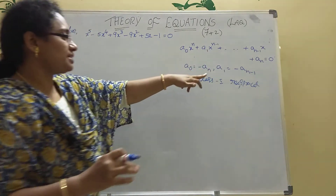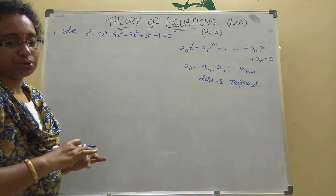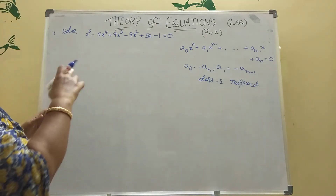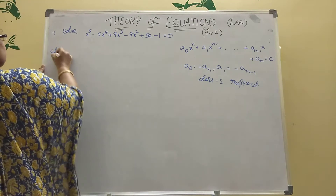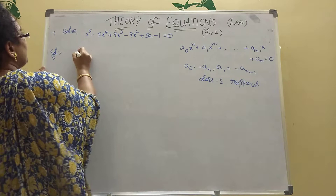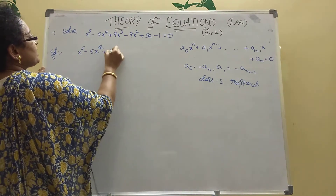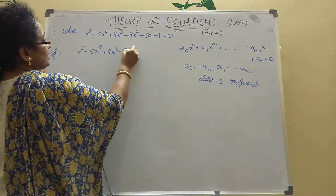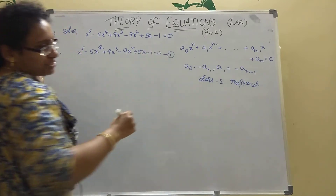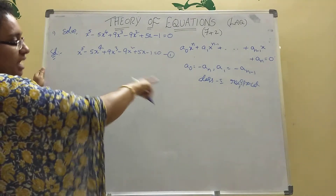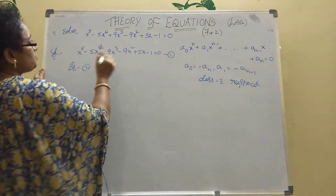A₀ = -Aₙ and A₁ = -Aₙ₋₁ — that is called Class 2 reciprocal equation. Now come to the point. Here the given equation is: x^5 - 5x^4 + 9x^3 - 9x^2 + 5x - 1 = 0. Equation 1 is a Class 2 reciprocal equation.